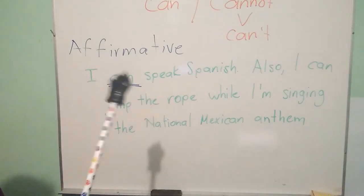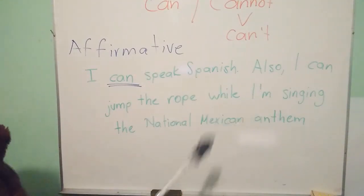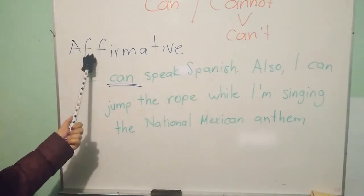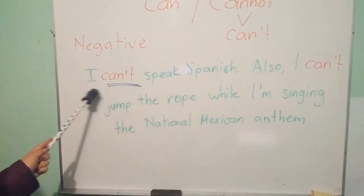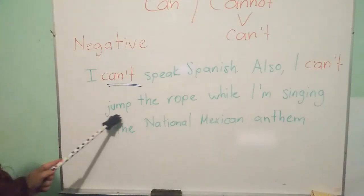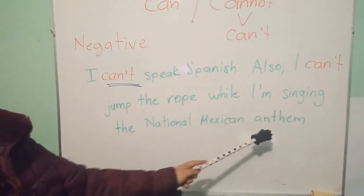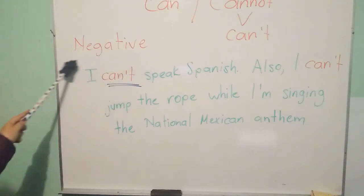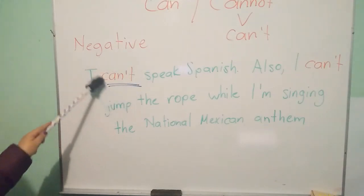Si yo quisiera decir todo lo contrario, que no puedo hablar español y que no puedo brincar la cuerda, entonces ya no hablaríamos de una oración en afirmativo. Tendríamos que cambiarlo a negativo: 'I can't speak Spanish.' Also, 'I can't jump the rope while I'm singing the national Mexican anthem.' De esta manera ya estamos haciendo oraciones negativas, cambiando el can a can't.